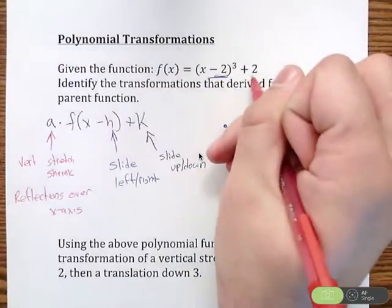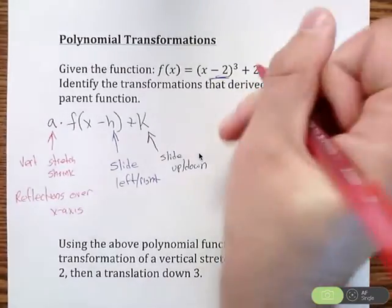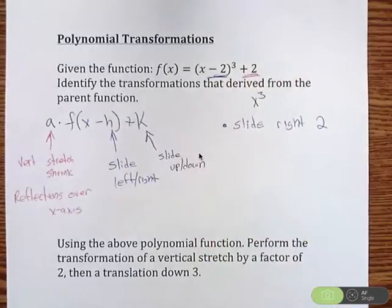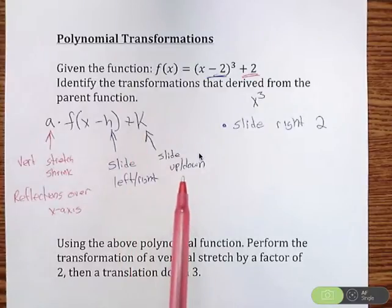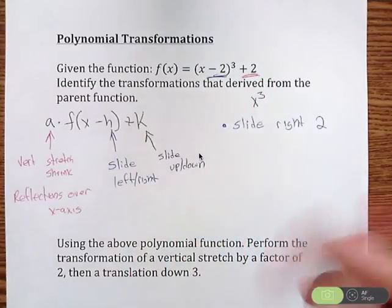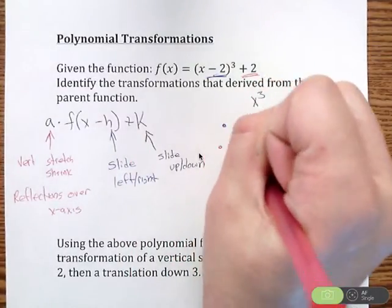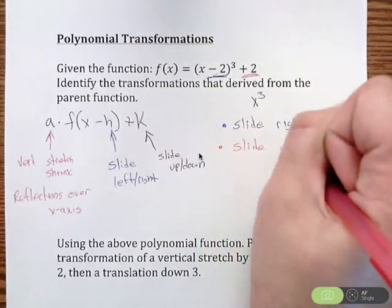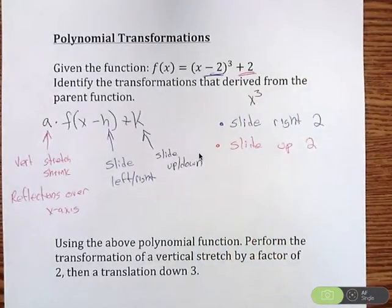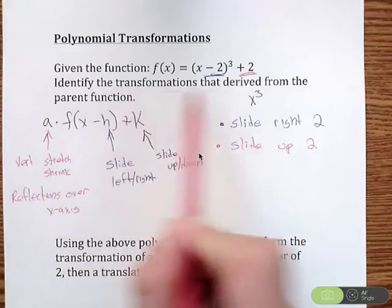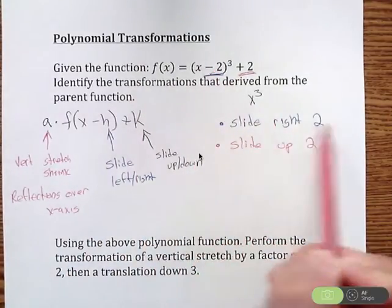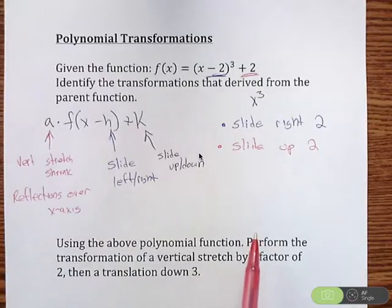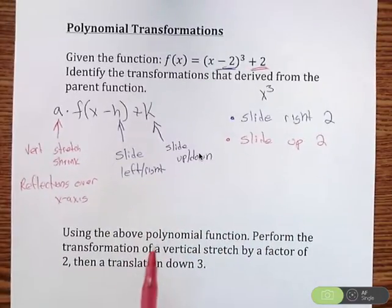And then this number on the back, that's something new that's not in our parent function. This plus 2 outside the parentheses at the back. Well, k is also outside the parentheses in the back, and that's slide up and down. So if I have a plus 2 there, that means we're going to slide up 2. So the transformations that took place here is the parent function, the graph, is going to slide right 2 and slide up 2. So that's just identifying the transformations.